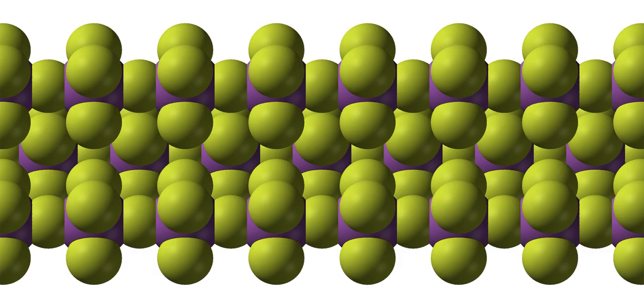Structure. Bismuth pentafluoride is polymeric and consists of linear chains of trans-bridged corner-sharing BiF6 octahedra. This is the same structure as alpha-UF5.